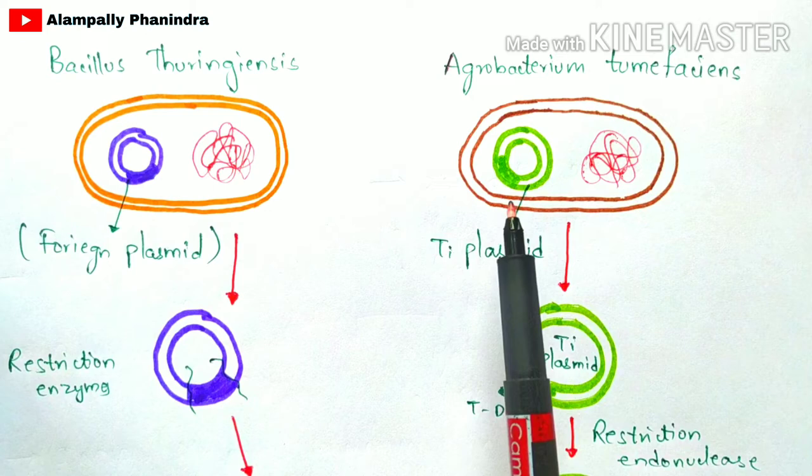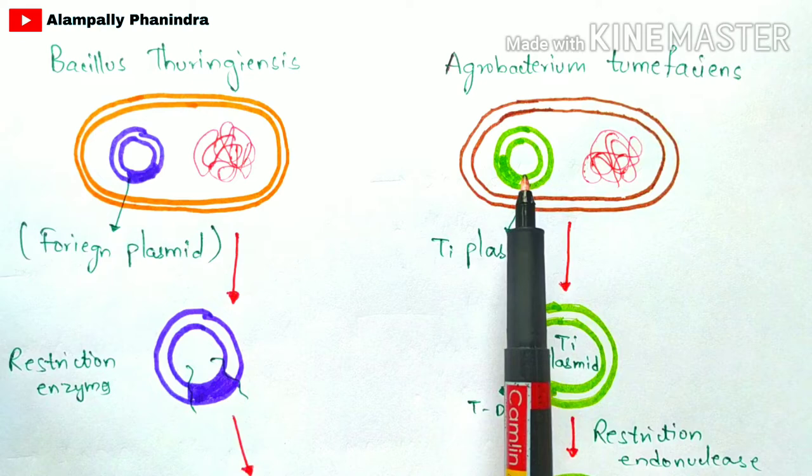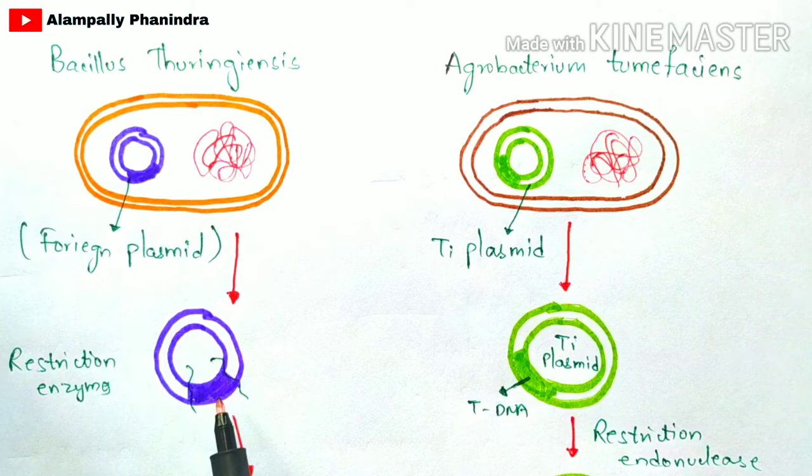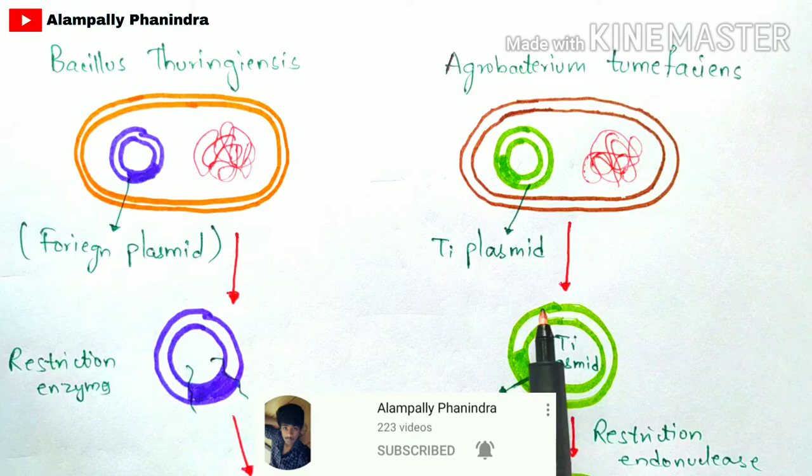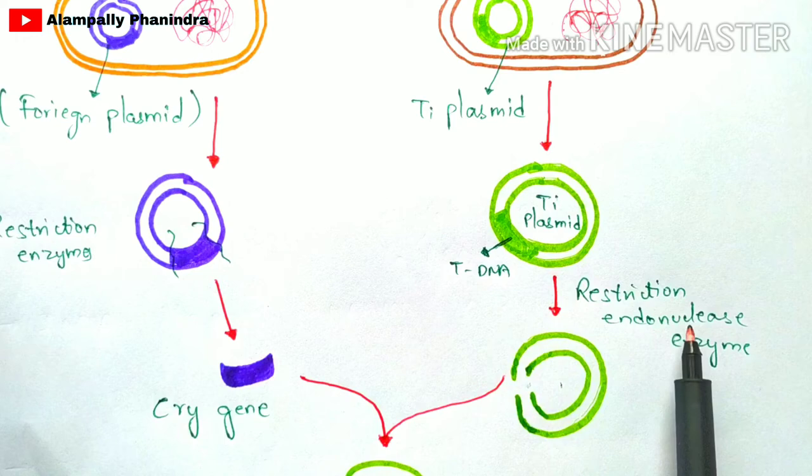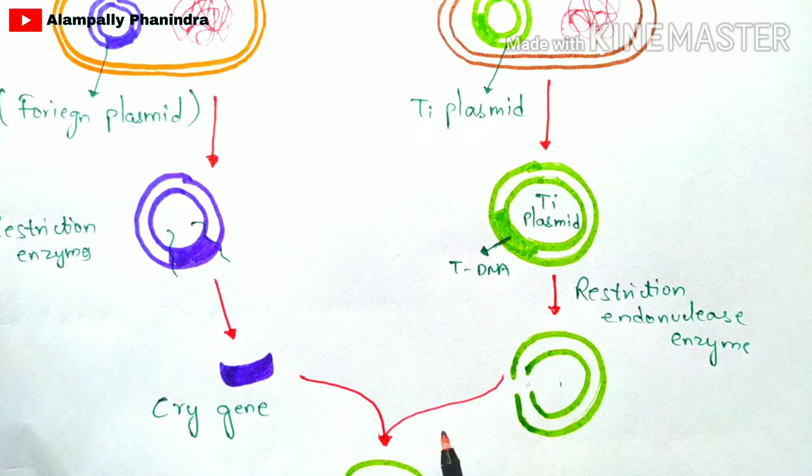On the other hand, we take the Agrobacterium tumefaciens bacterium, which contains the Ti plasmid. The shaded region in the Ti plasmid is the T-DNA. The restriction endonuclease enzyme is then used to cleave the T-DNA from this Ti plasmid.